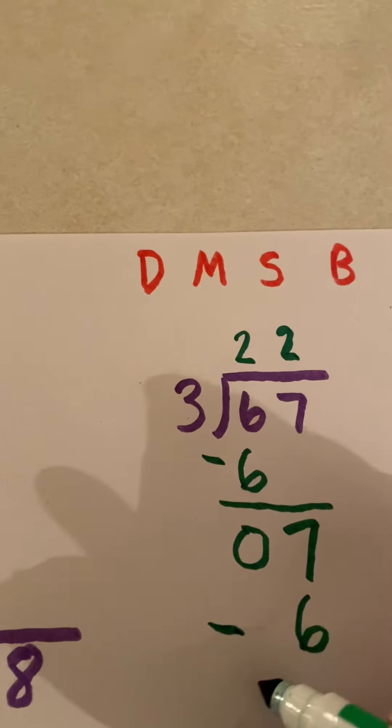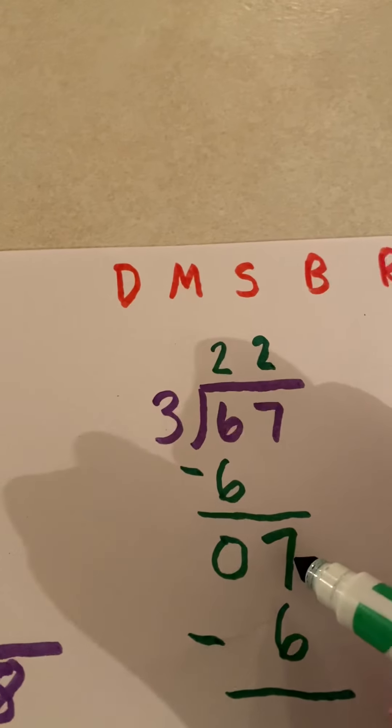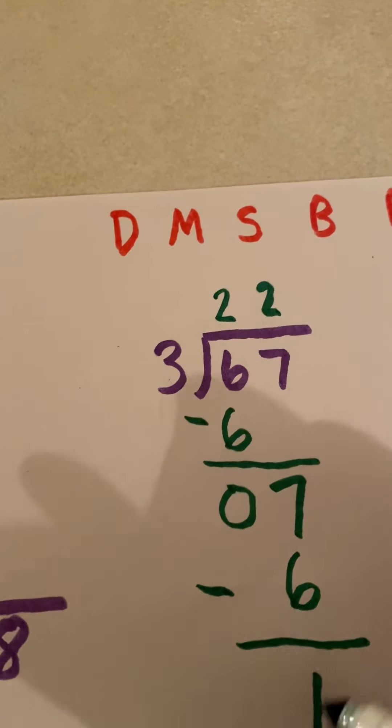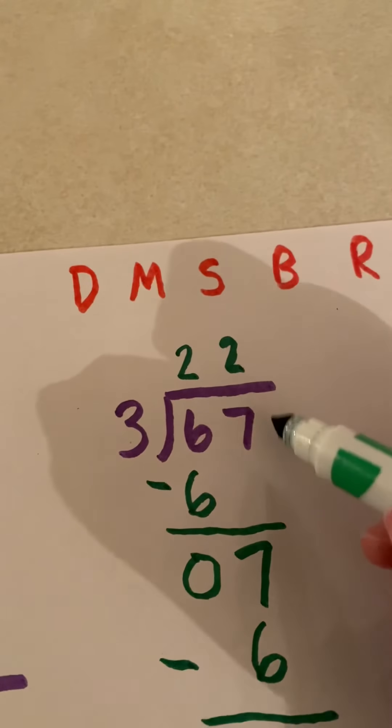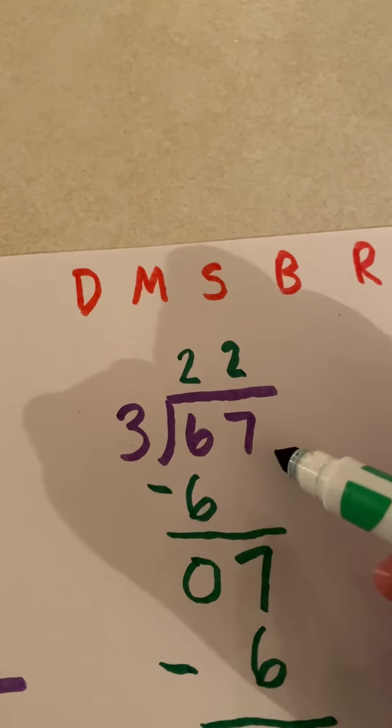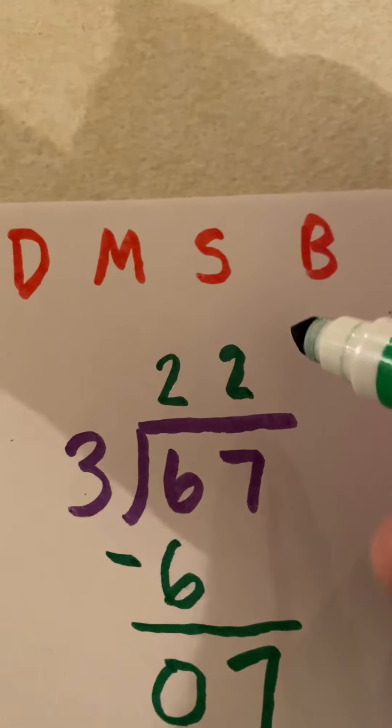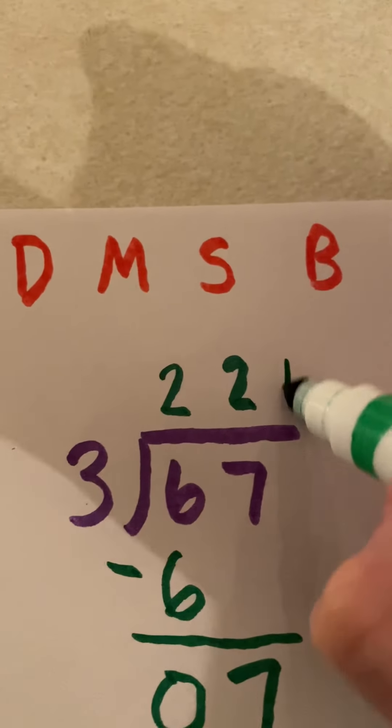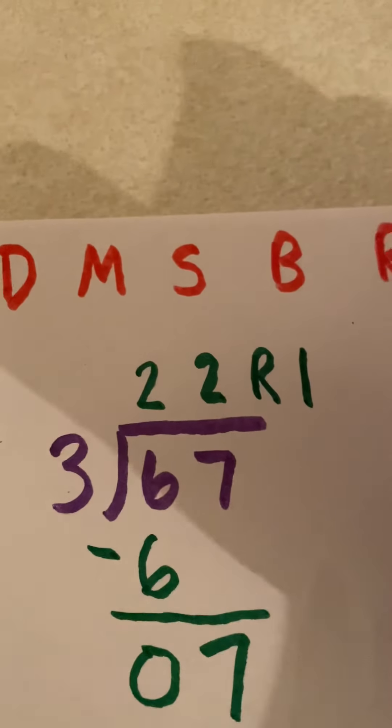I subtract. 7 minus 6 equals 1. Bring down. I can see I don't have anything left to bring down. So now I've just got my remainder, which is 1. So my answer here to 67 divided by 3 is going to be 22, remainder 1.